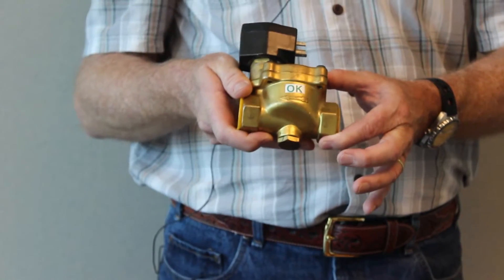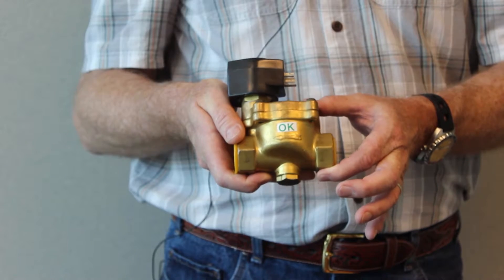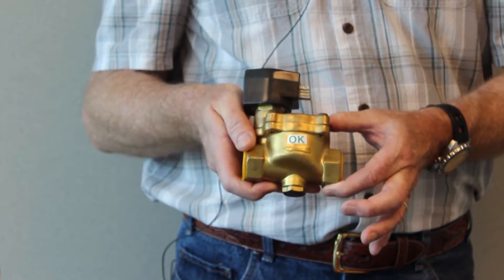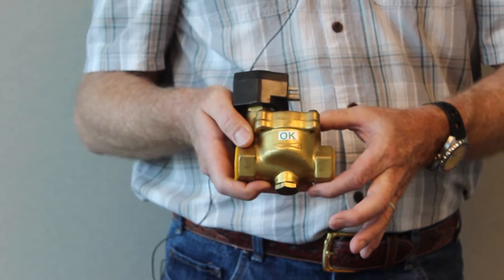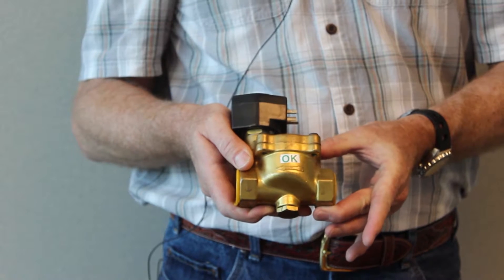The other component is the makeup solenoid. We provide the solenoid or you can order your own. Installation of the solenoid is generally inside the building adding water to the water loop. There's an arrow on the solenoid that shows the direction of water flow.